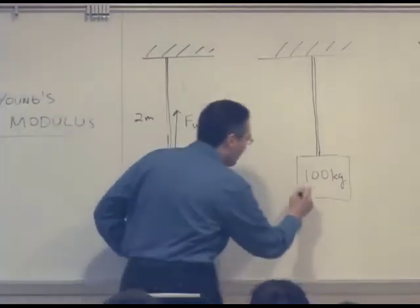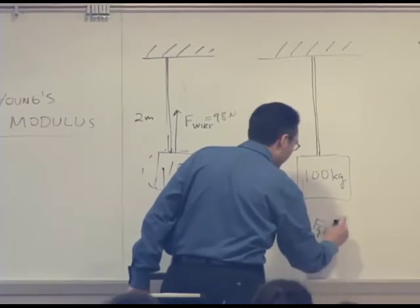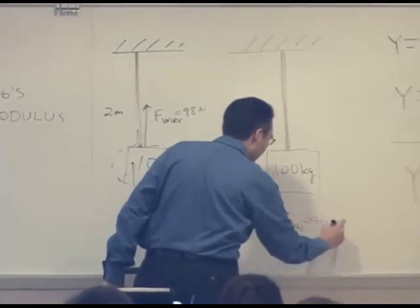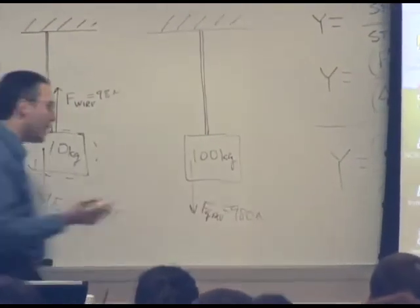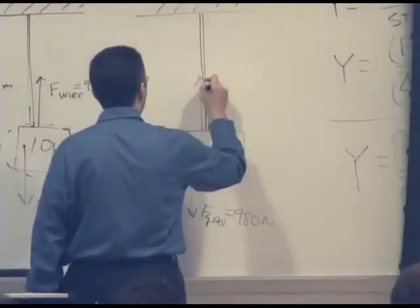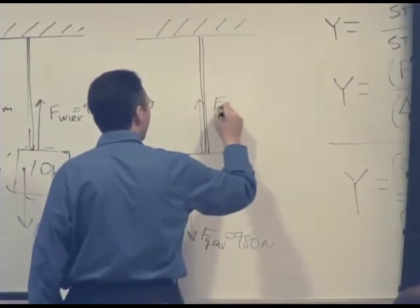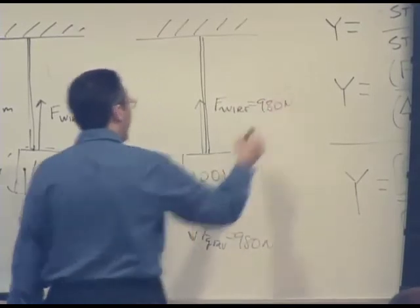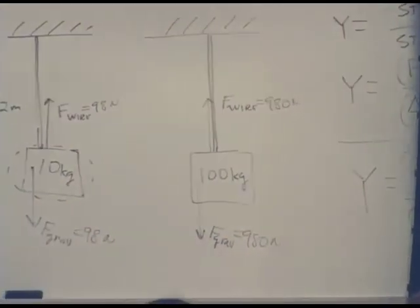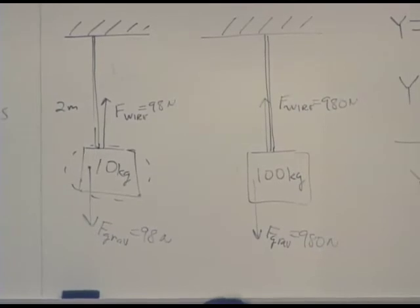What's the gravitational force acting on the 100-kilogram block? 980 newtons. What's the tension force in the wire? 980 newtons. You know that's got to be true because, again, the momentum isn't changing. But it's the same wire. So how does the wire know to exert more force on the heavier object?